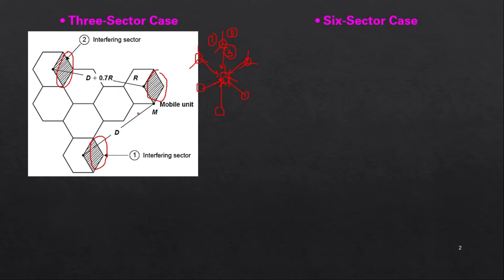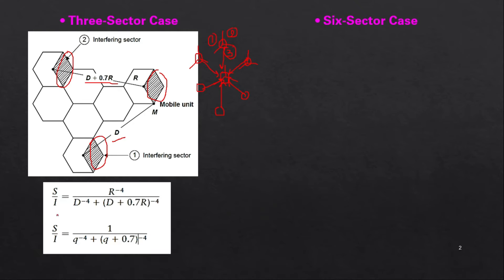The two interfering cells have distances of d and d plus 0.7R. Therefore, the signal-to-interference ratio becomes R^(−4) divided by [D^(−4) + (D + 0.7R)^(−4)], using a path loss exponent γ = 4. Dividing numerator and denominator by R, we get q^(−4) + (q + 0.7)^(−4) in the denominator.